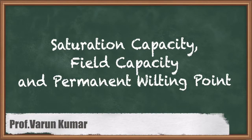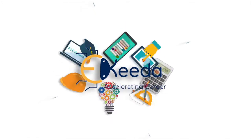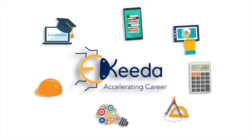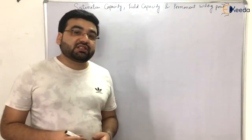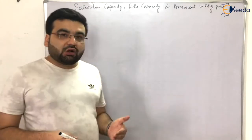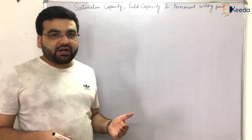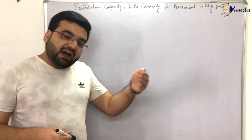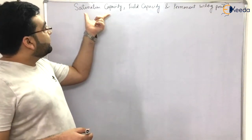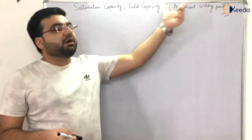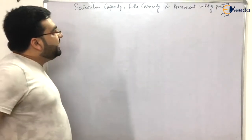Welcome to irrigation engineering, chapter on soil water constants. The topic is saturation capacity, field capacity, and permanent wilting point. We have started a new chapter which is soil water constants. This chapter is very important because in the past three to five years, questions are very frequent from this topic in GATE examinations.